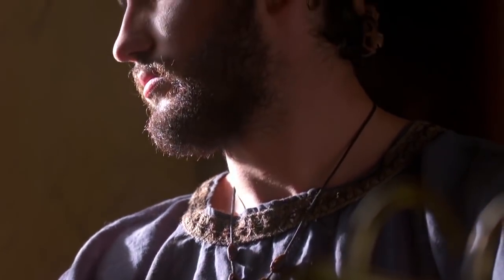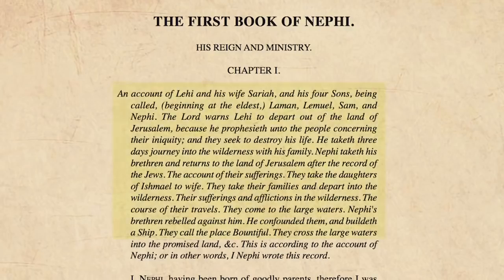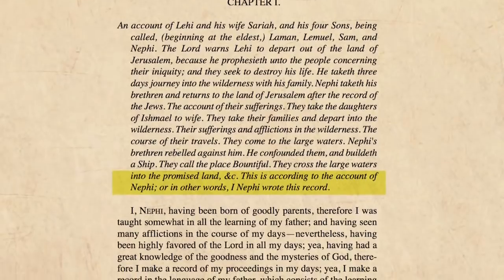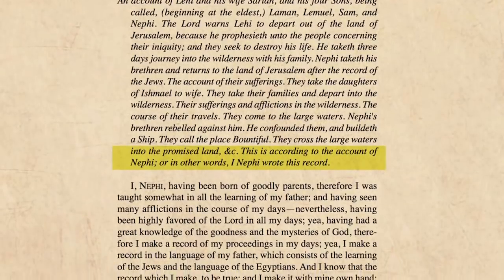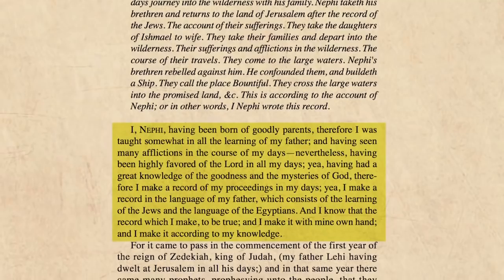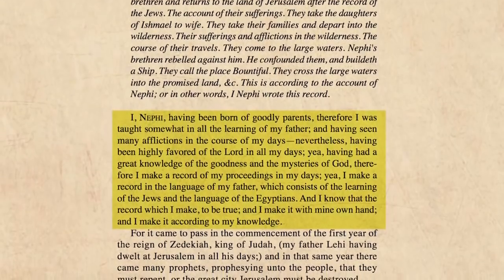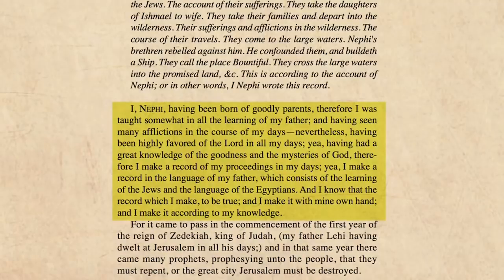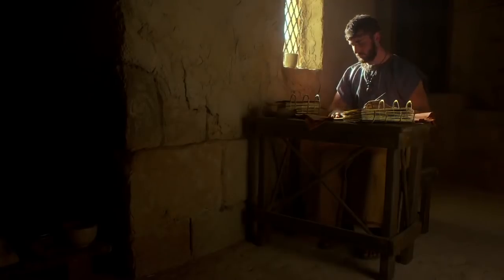Nephi's introductory colophon is arguably the most notable example of its use in the Book of Mormon. After summarizing the contents of his record and identifying himself as both scribe and author of the text, Nephi began his account by affirming his good parentage and upbringing, his education and scribal training, and his reliability as an author.